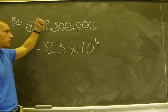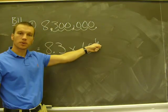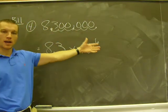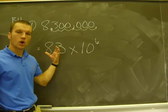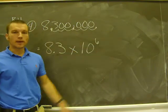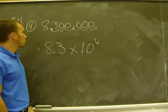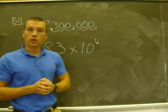So remember, it's a big number, exponent's positive. If you start with a small number, your exponent will have to be negative. And how many spaces I go to get it between 1 and 10 will be my exponent. So keep working. Remember, you've got to do your homework in order to pass this course.